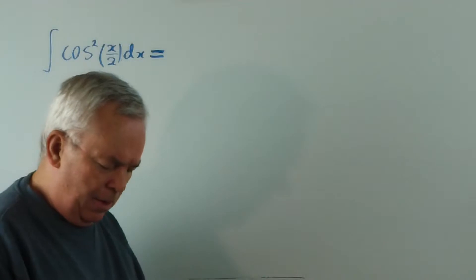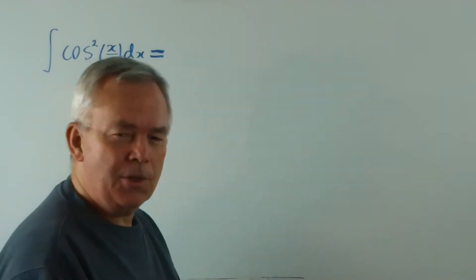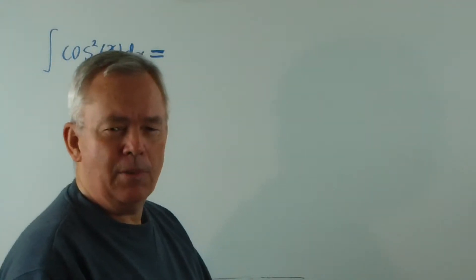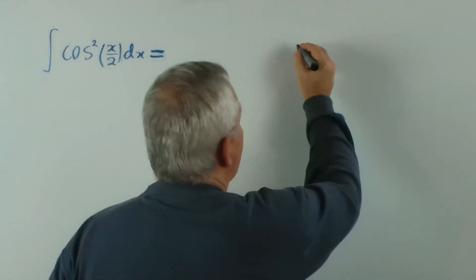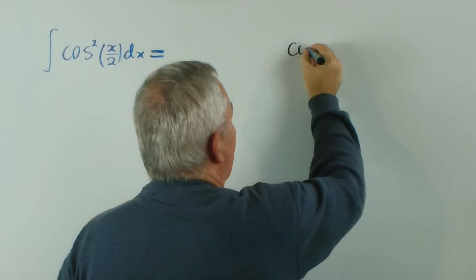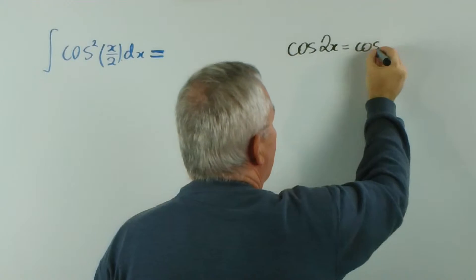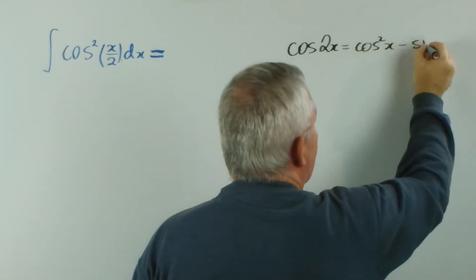Any time you get a square of a trig function, you'll be very suspicious that you're either dealing with a double angle or a trigonometric identity. In this case, we would remember that the cosine of 2x is cos squared x minus sin squared x.